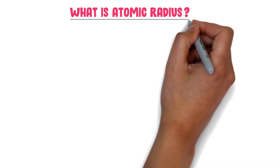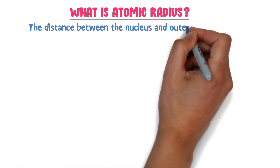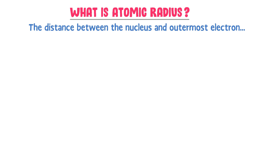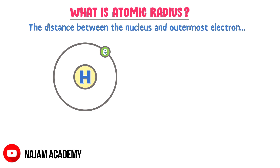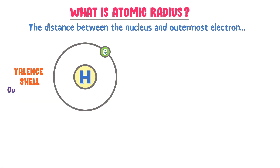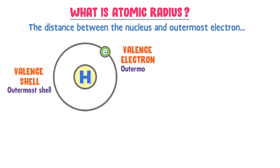What is atomic radius? The distance between the nucleus and outermost electron is called atomic radius. For example, consider a neutral hydrogen atom. There is only one shell and one electron in a single hydrogen atom. This shell is called the valence shell or outermost shell, and this electron is called the valence electron or outermost electron. The distance between the nucleus of hydrogen and outermost electron is called the atomic radius or radius of hydrogen.